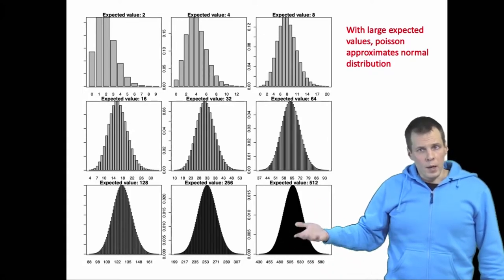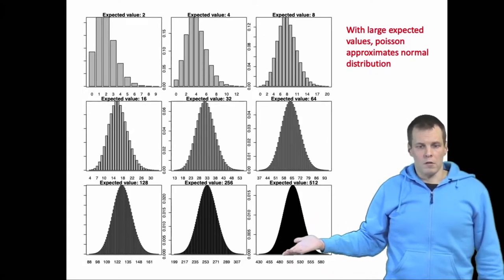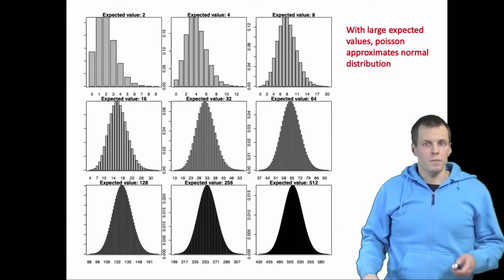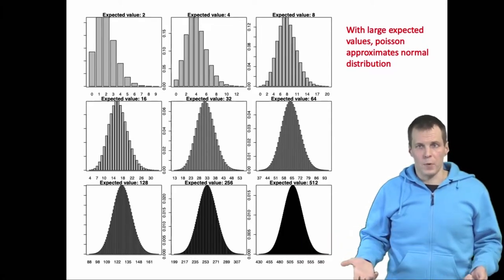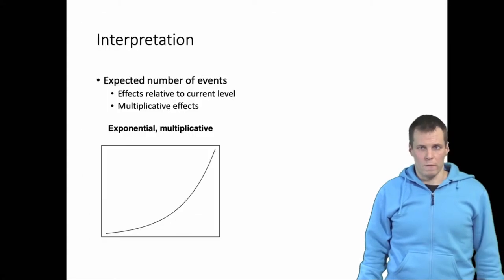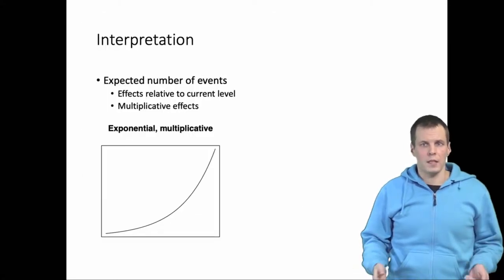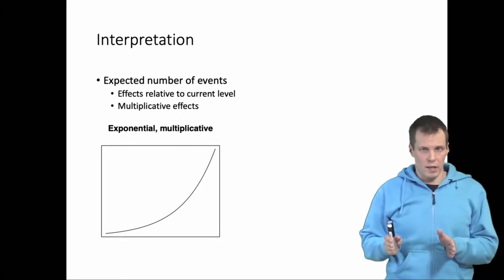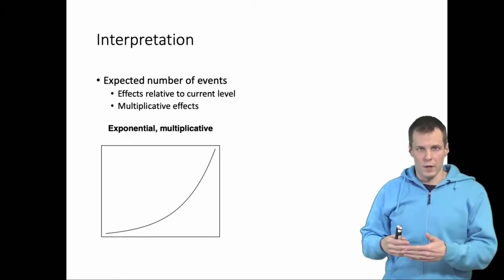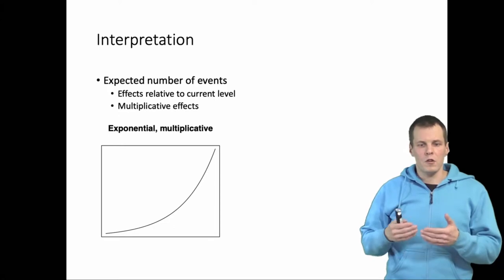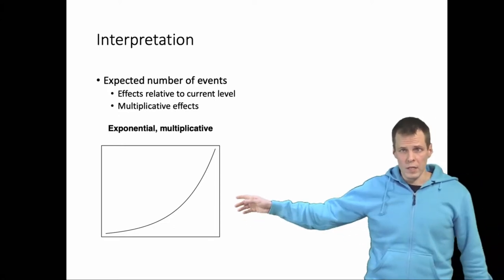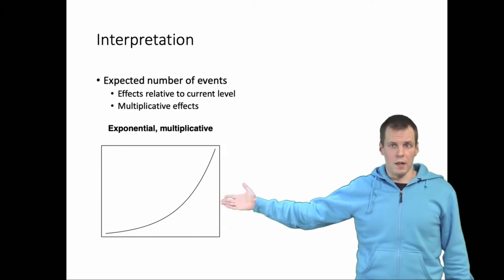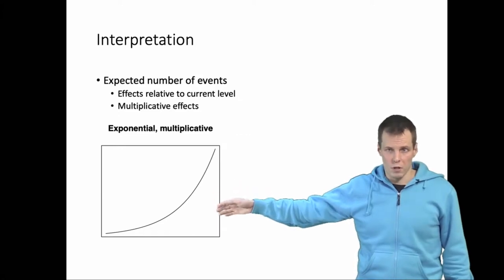You apply the Poisson regression model when you believe that the exponential model is the right model for your data — meaning you expect the effects to be relative to the current level and multiplicative. You interpret these results the same way as when your dependent variable is log-transformed.